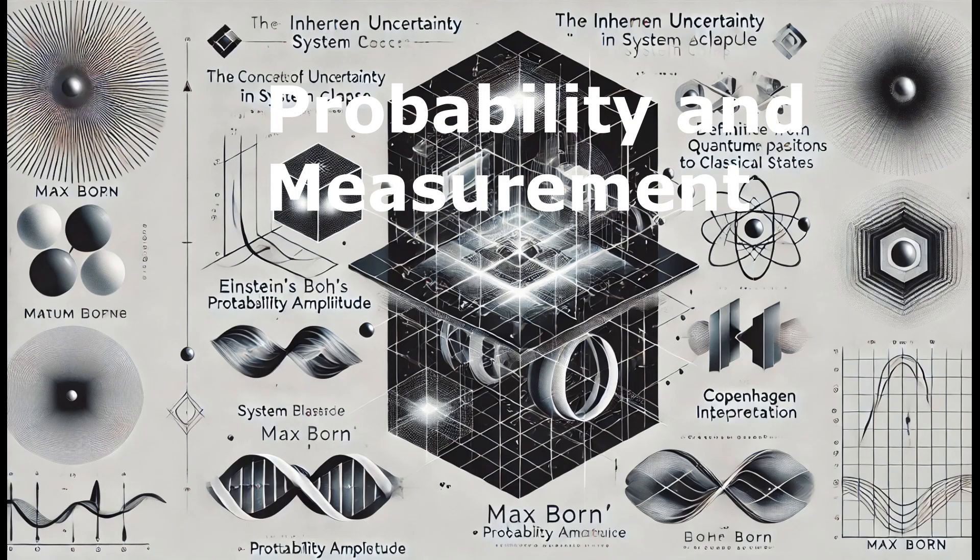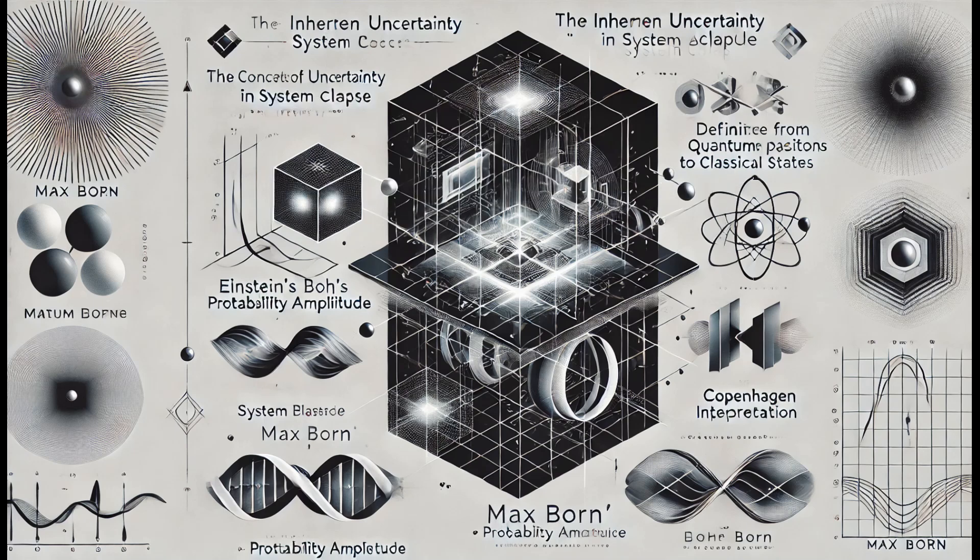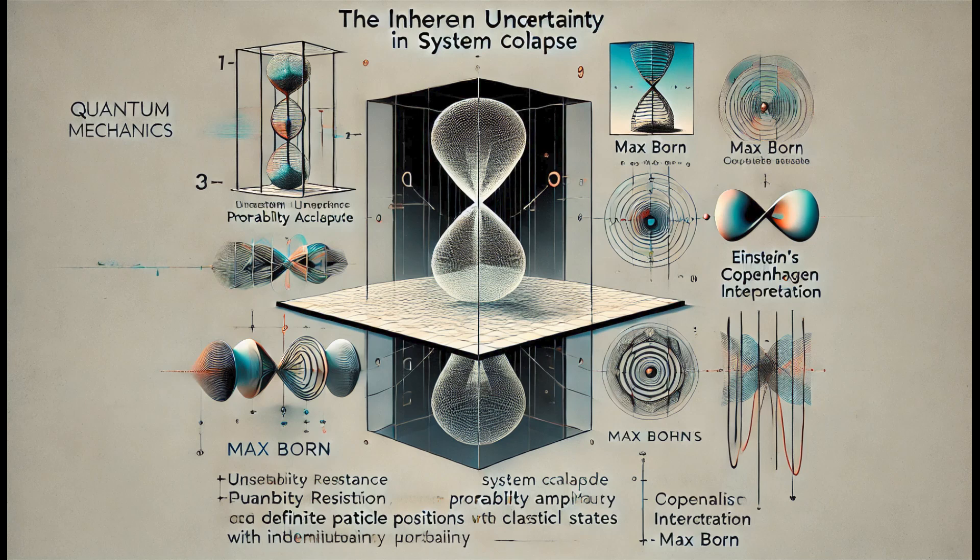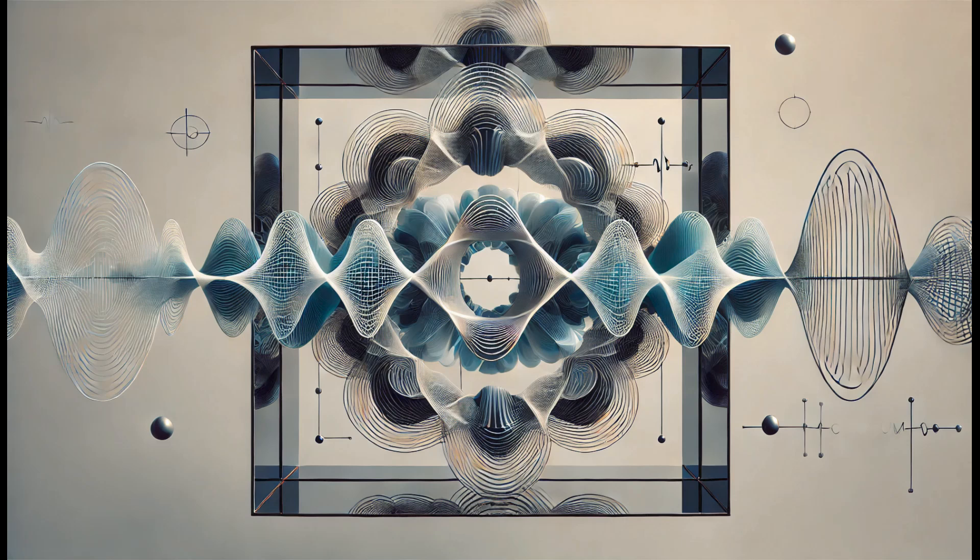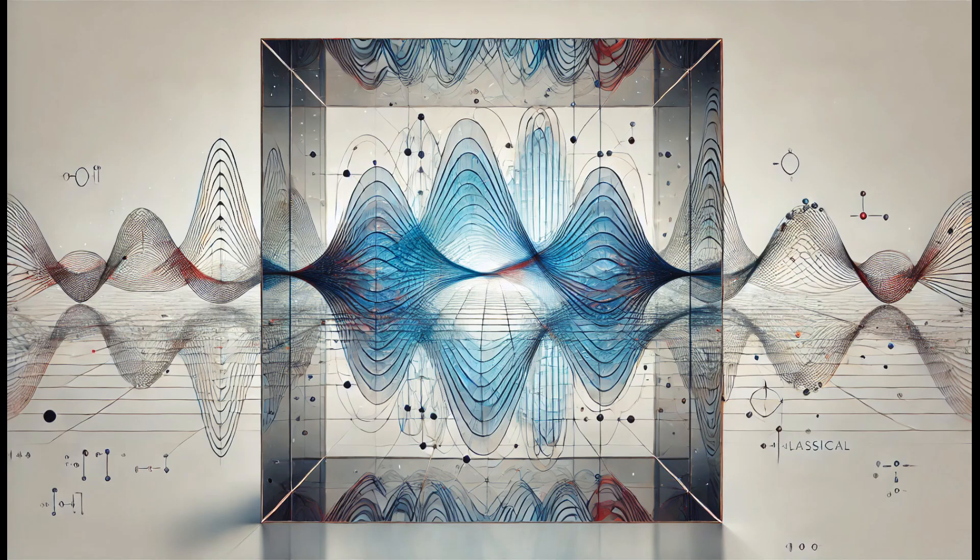The inherent uncertainty in determining the state in which a system will collapse is one of the cornerstones of quantum mechanics. Max Born's interpretation of the Schrodinger equation introduced the concept of probability amplitude. The square of the absolute value of the amplitude of the wave function provides the probability that the system will collapse to the state associated with that wave function. This probabilistic structure dictates the transition from quantum to classical states, a concept that troubled many early physicists, including Einstein and Schrodinger, who sought a fundamental determinism beyond mere probability.